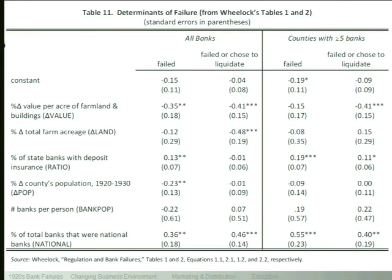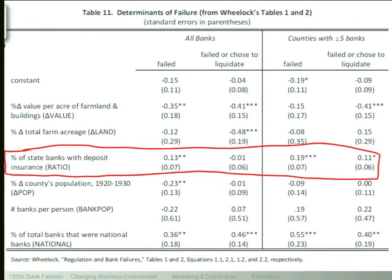The various variables along the left column show the things he tries to control for in this county-by-county analysis: change in value of farmland and buildings, change in cultivated acreage, ratio of banks in the county that have insurance — the key variable testing whether insured banks are more likely to fail — change in population as a proxy for economic activity, number of banks per person, and percentage of banks that were national banks. One concern is selection bias: what if the banks more likely to fail because of their location are the ones that choose to buy insurance? That's why we need to control for the factors that determine the likelihood of a bank's failure.